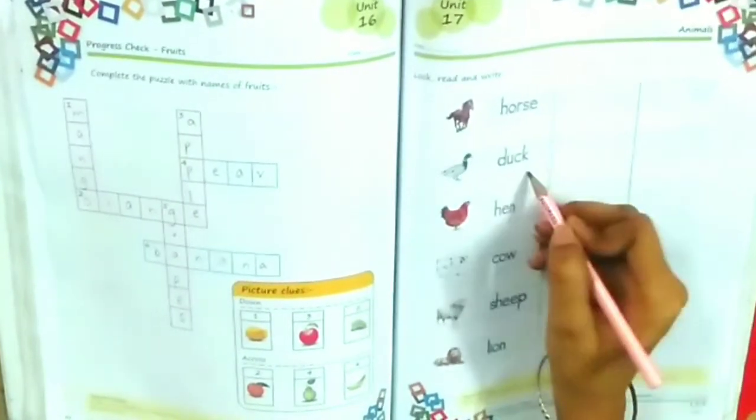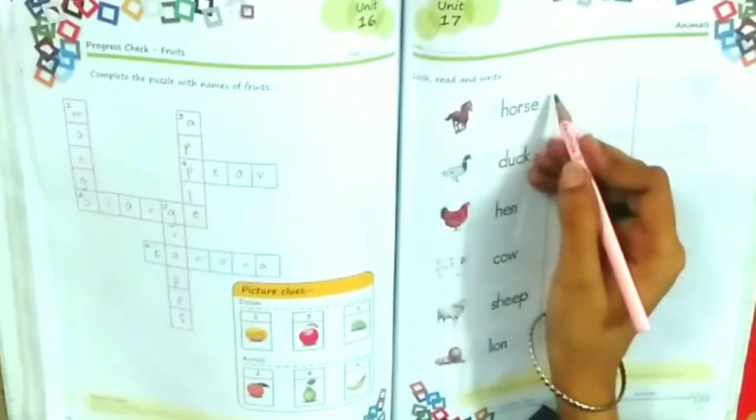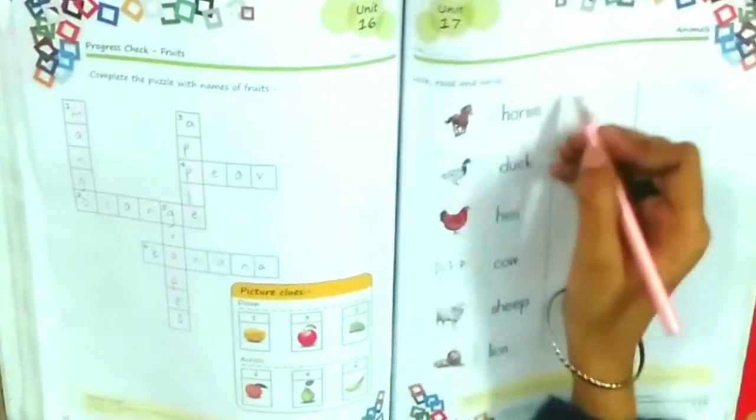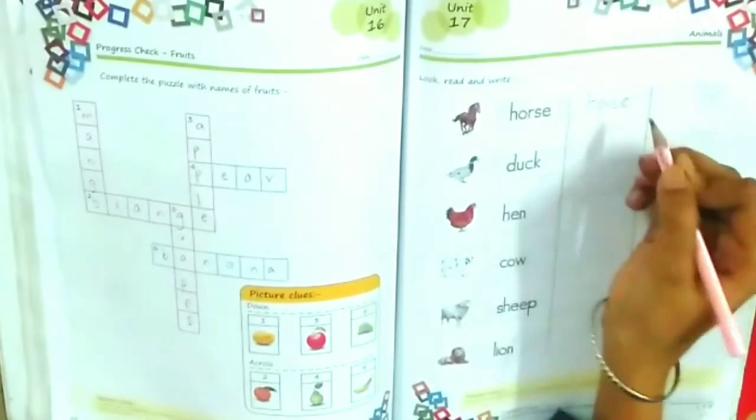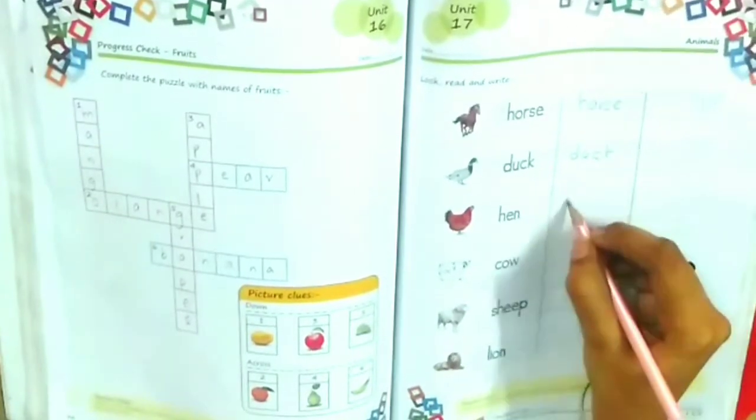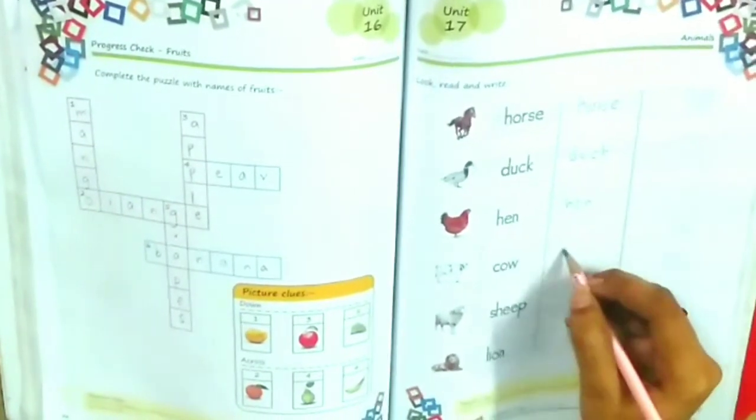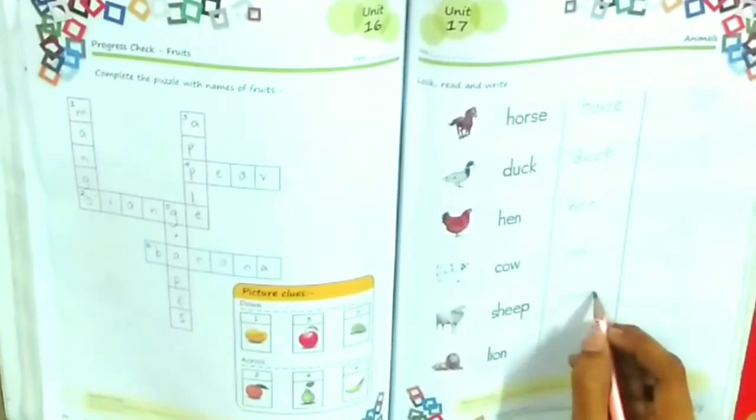Say again with me: horse, duck, hen, cow, sheep, lion. You have to write all the animals. You have to read and write: horse, duck, hen, cow, sheep, lion.